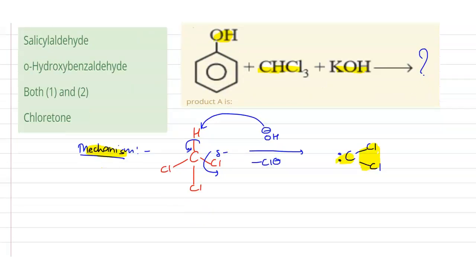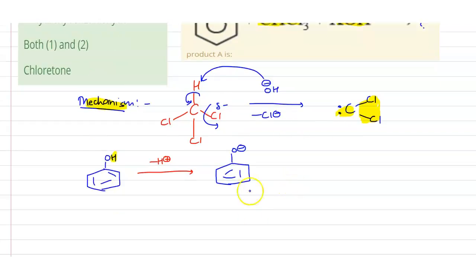Now what happens here? We are having the phenol. It is acting as an acid. What happens? It just releases this acidic proton and it becomes the phenoxide ion, that is O minus attached with the benzene.